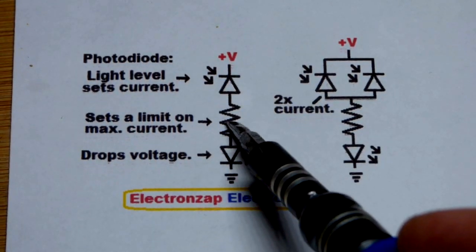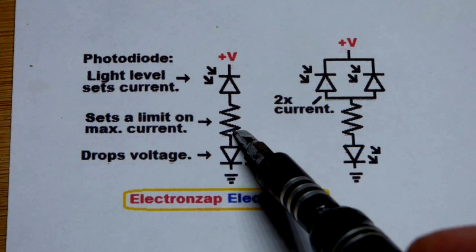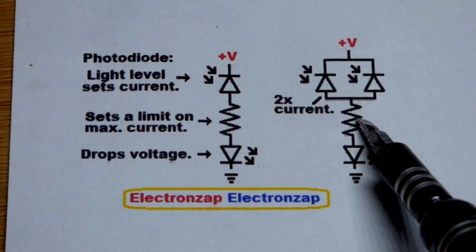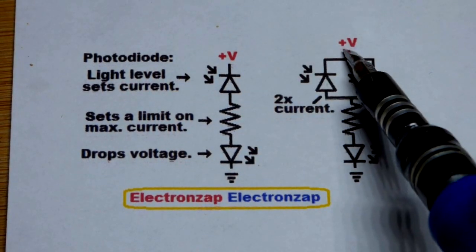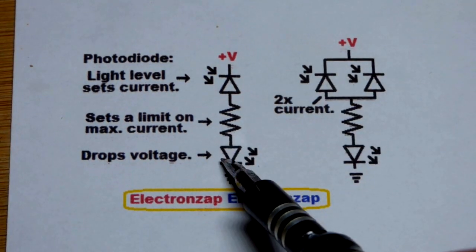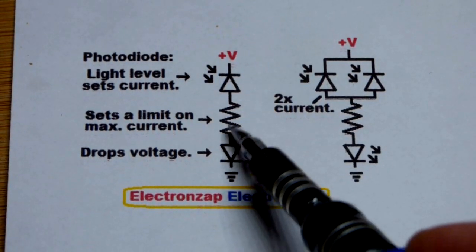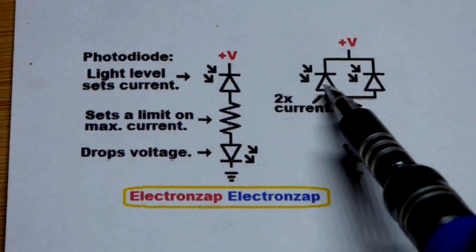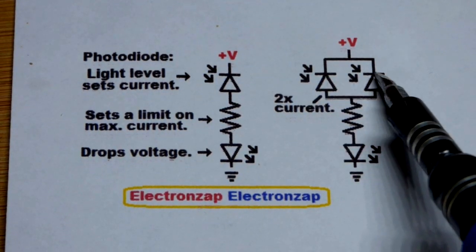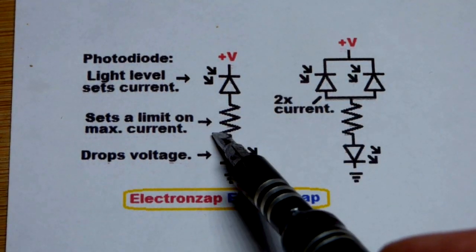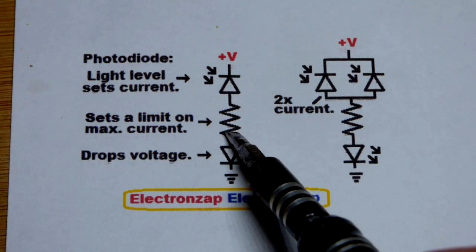So the resistor is going to limit current. But that's based on its resistance and how much voltage you have at the power supply minus how much is being dropped. And that's if the photodiode or the two photodiodes are trying to conduct more than what the resistor will allow.